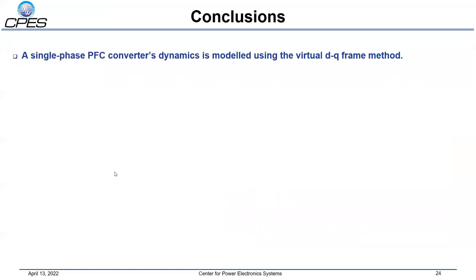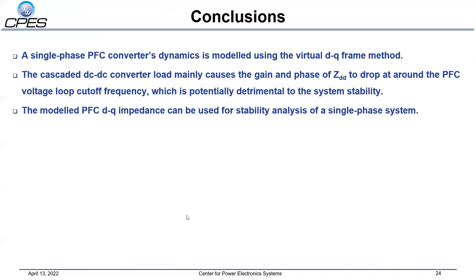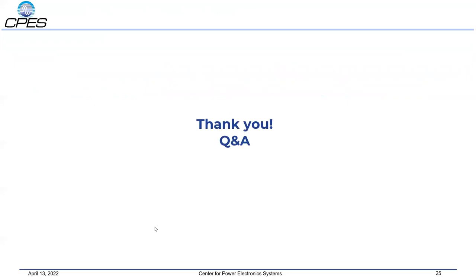In conclusion, a single-phase PFC converter's dynamics is modeled using the virtual DQ frame method. The cascaded DC-DC converter load is found to cause the gain and phase of ZDD to drop at around the PFC voltage loop cut-off frequency, which is potentially detrimental to system stability. The modeled PFC DQ impedance is verified to be effective for stability analysis of a single-phase system. Thank you for your attention. Please feel free to provide any questions or comments.